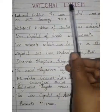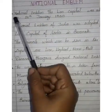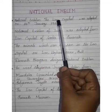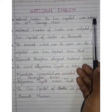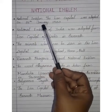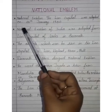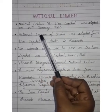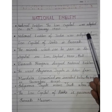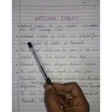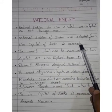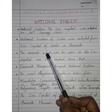The National Emblem of India was adopted on 26th January 1950. It was adopted from the Lion Capital of Ashoka in Sarnath.